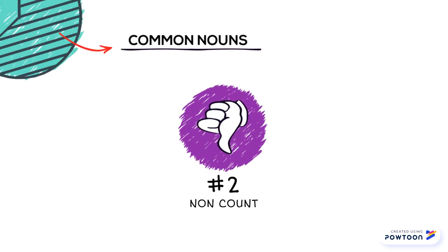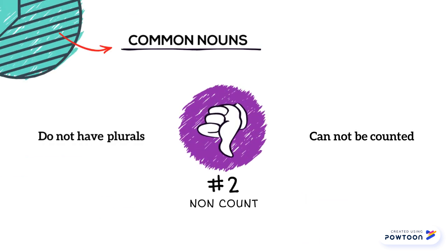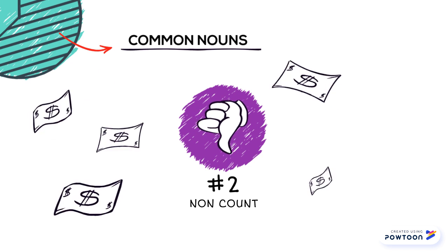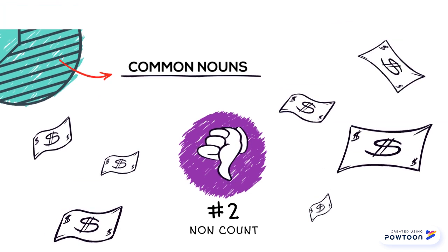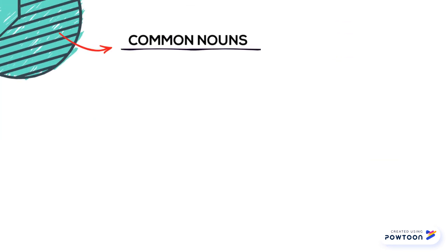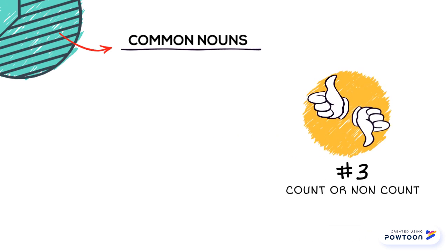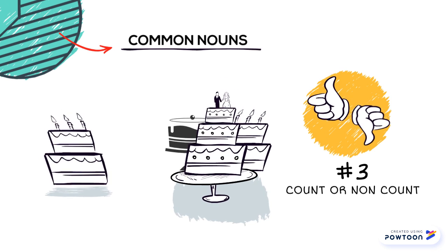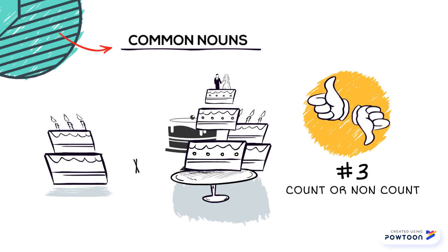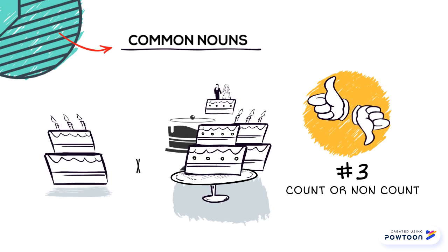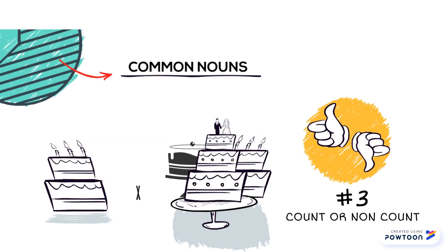Non-count or mass nouns do not have plurals and cannot be counted. For example: she has cash. And both, which depend on the context to be countable or not. For example, you can like cakes or like cake. In the first version, you like individual cakes. In the second, you like undifferentiated cake.